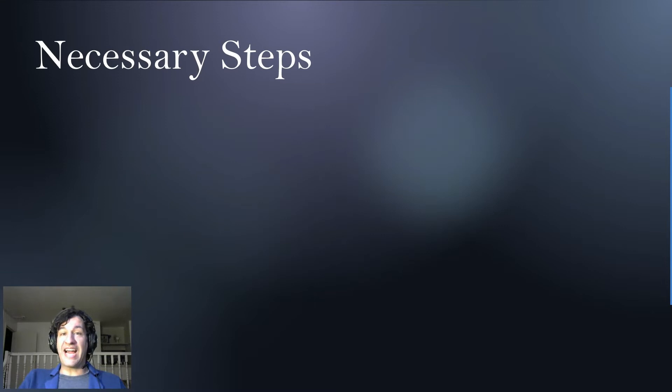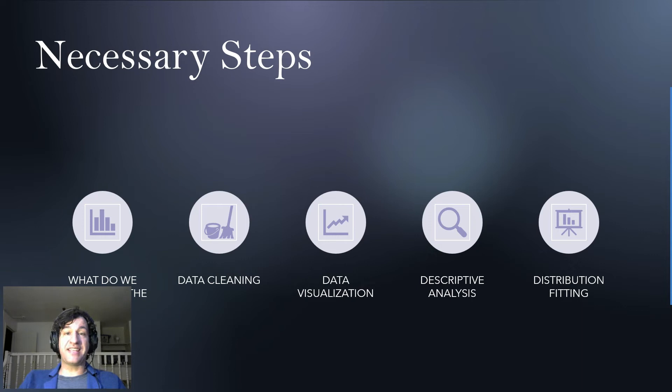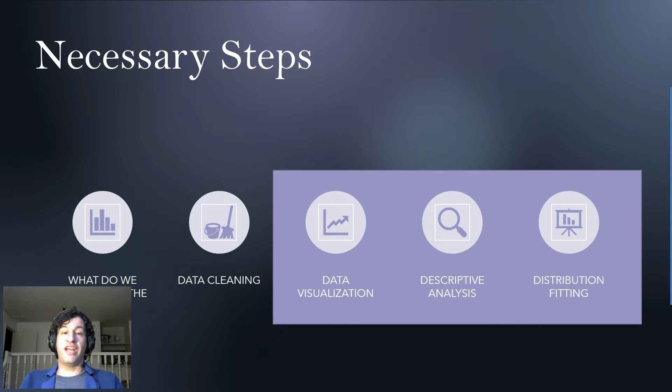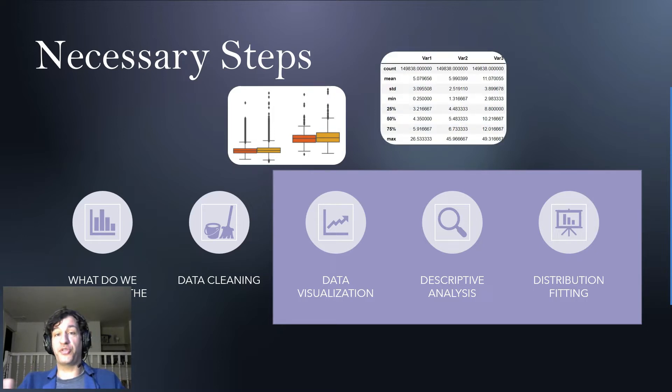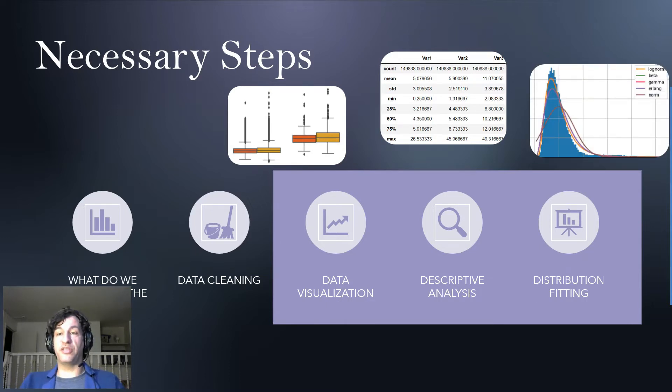So what are the necessary steps for this? In any data science endeavor, and in particular fitting a distribution, you need to follow different steps. For this video we will ignore everything related to data cleaning and data collection and all that kind of stuff. We'll assume that we have a clean data set that we can use and it's useful. So we will talk about data visualization, so how does the data look like? We will talk about descriptive analysis, so all the elements, statistical elements that are related to our empirical data.